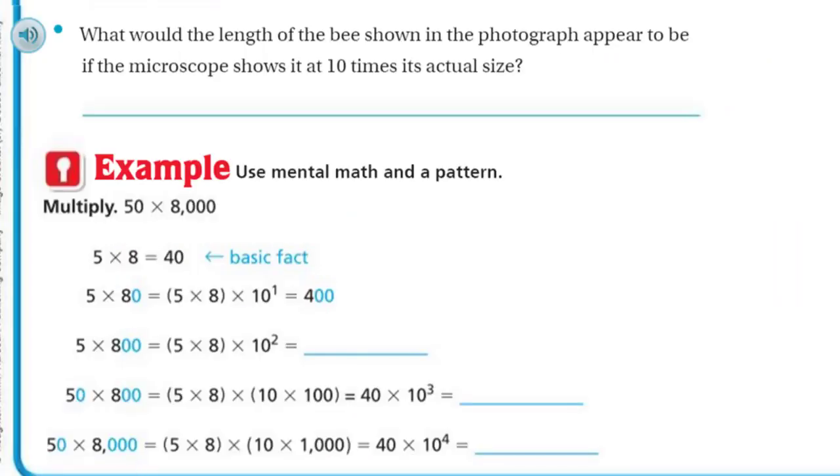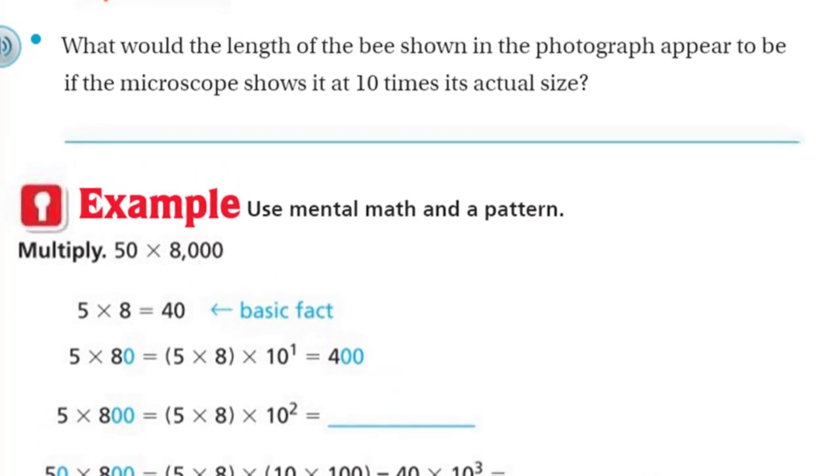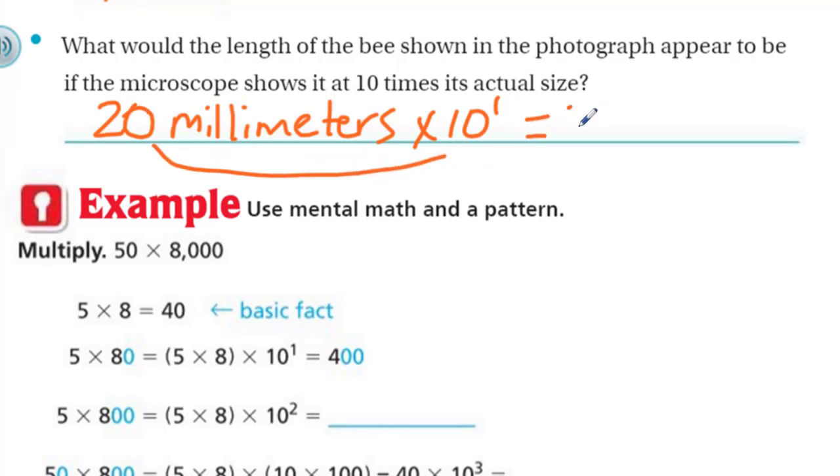What would the length of the bee shown in the photograph appear to be if the microscope shows it at 10 times its actual size? Its actual size was 20 millimeters, times 10. Well, that's 10 to the first power. We're going to end up with, it's 10 times greater, it's just going to add on another zero. So it's actually going to be 200 millimeters.